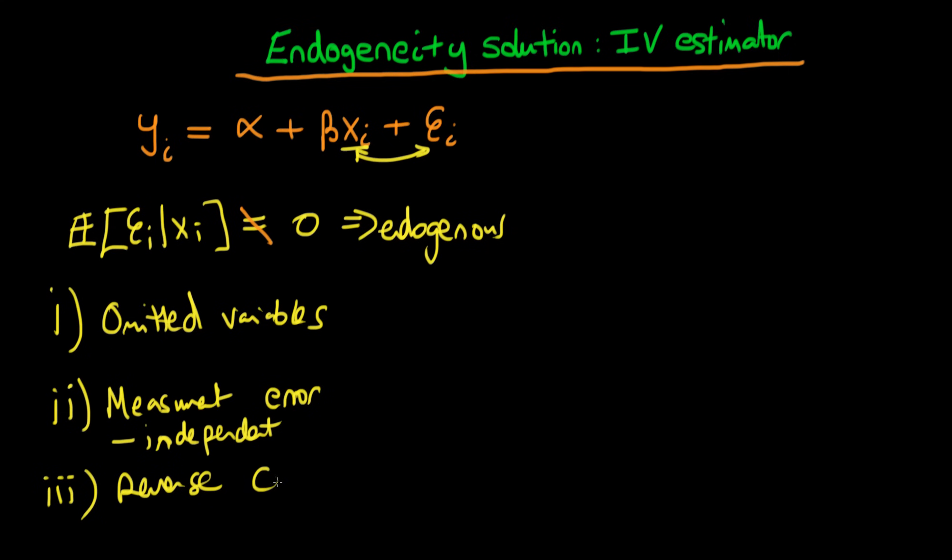So reverse causality, what does this exactly mean? Well, the idea with reverse causality is that the primary process which we're interested in is how x causes y, but there may also be a way in which y causes x. This is often referred to as some sort of selection bias in cross-sectional models.